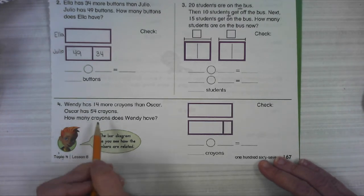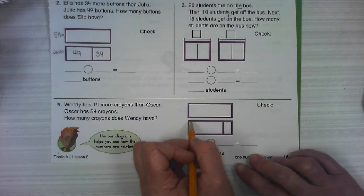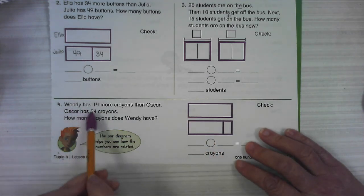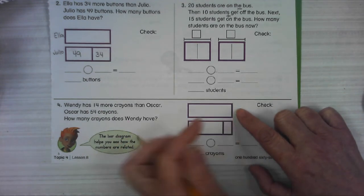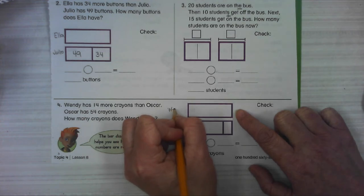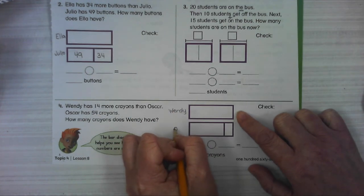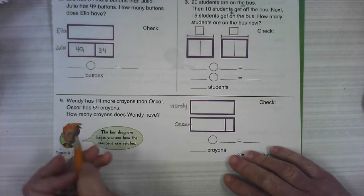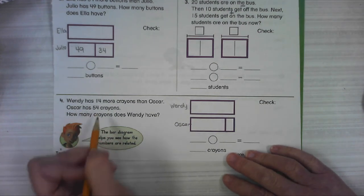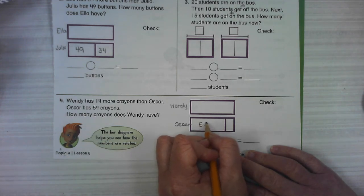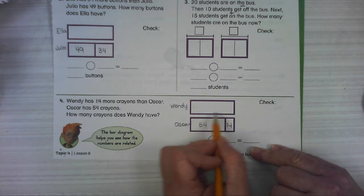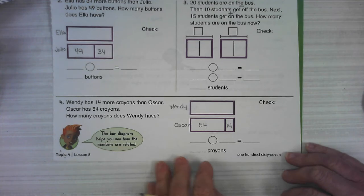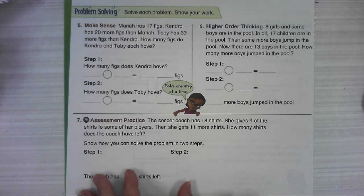Number four. Wendy has 14 more crayons than Oscar. So these are going to be Wendy and Oscar's bars. And it says, Wendy has more than Oscar. So Wendy is going to have the one that's longer and doesn't have a break in it. Oscar has 54 crayons. How many does Wendy have? Well, she's got 14 more than Oscar. So how much is that together?